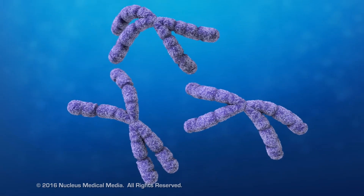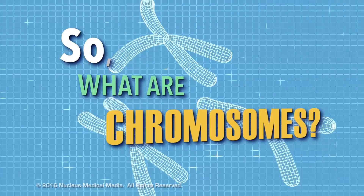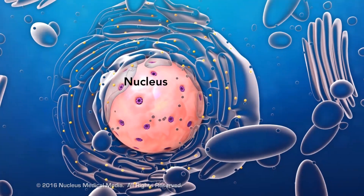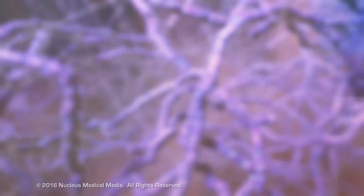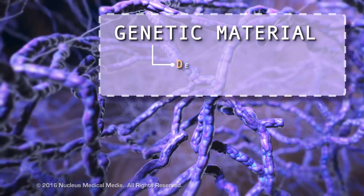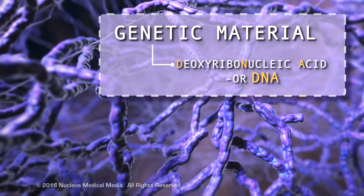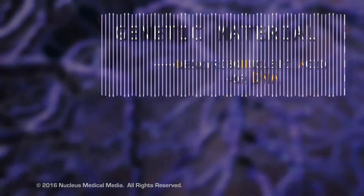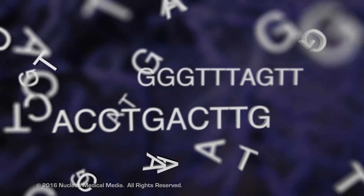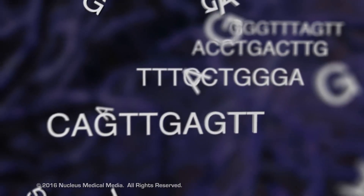Chromosomes are an important part of cell division. So, what are chromosomes? Let's look inside a cell's nucleus. Here, we find the nuclear genetic material, known as deoxyribonucleic acid, or DNA. Each cell's DNA holds the genetic code, or instructions, for everything within that organism.